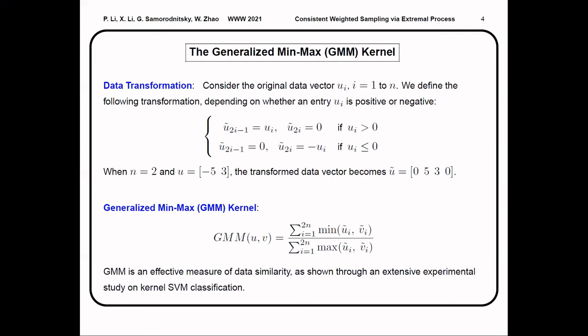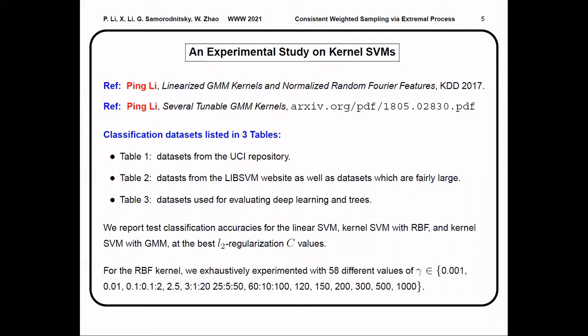By this data transformation technique, we can make the Jaccard applicable to negative data, and we call this generalized min-max kernel. It is an effective measure of data similarity as shown through an extensive experimental study in kernel SVM classification.